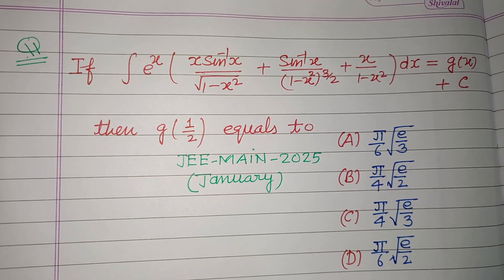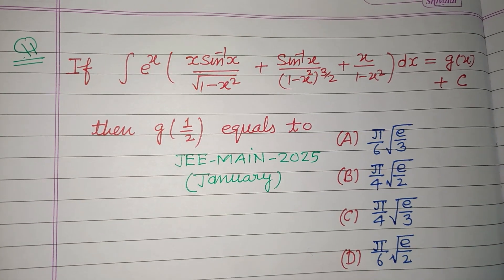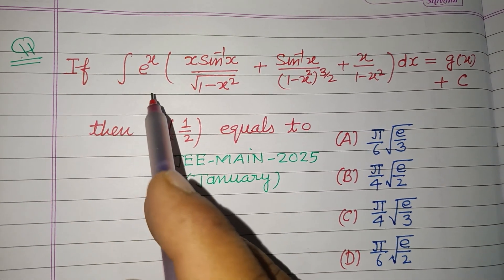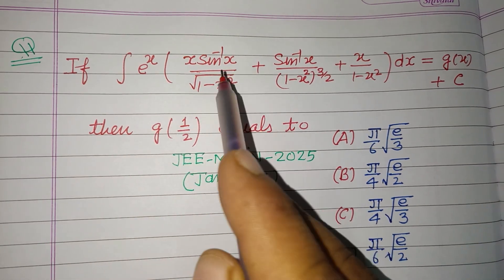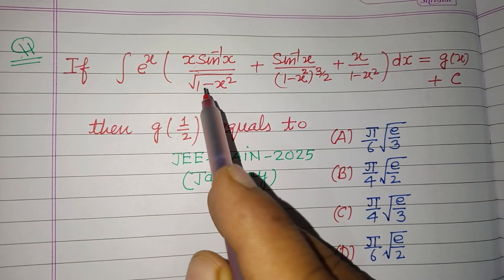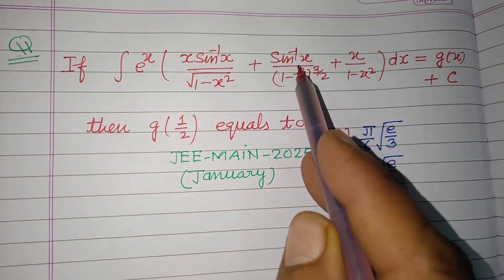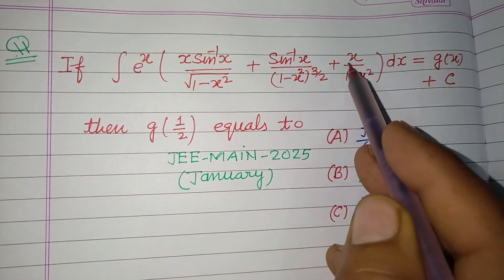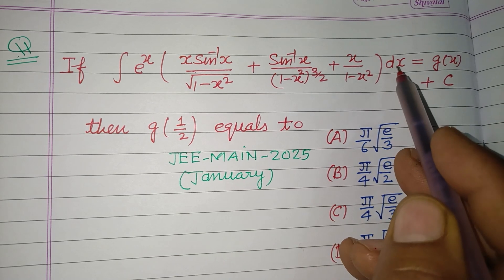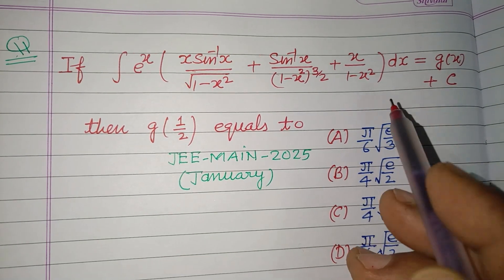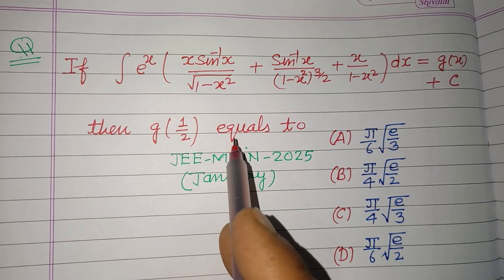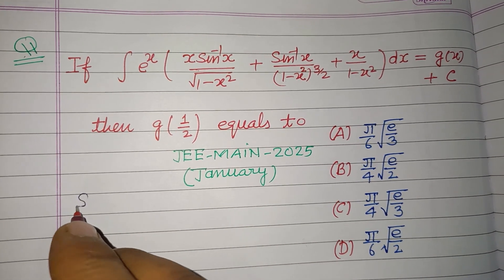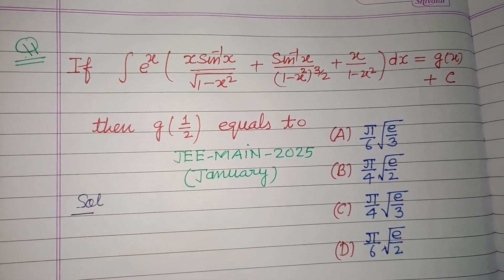Hello viewers, welcome to this YouTube channel. This question is from JEE Main 2025 January attempt. If the integration of e^x times [x·sin⁻¹x / √(1-x²) + sin⁻¹x / (1-x²)^(3/2) + x/(1-x²)] dx equals g(x) + C, then find g(1/2).